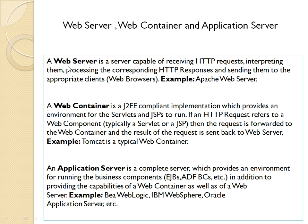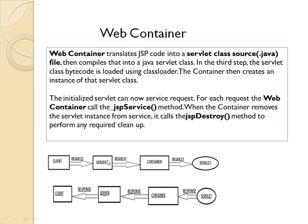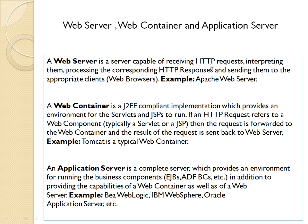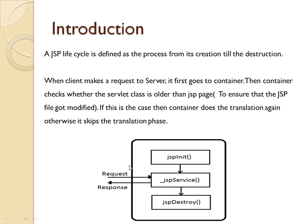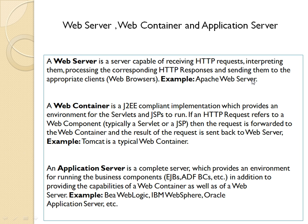We should also know the difference between a web server, web container, and application server. A web server is a server capable of receiving HTTP requests, interpreting them, and sending the processed response back to the appropriate client. As seen in the diagram, the server receives the request and responds to the client. An example of a web server is Apache Web Server.